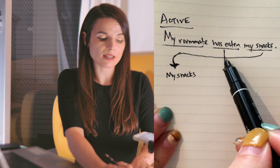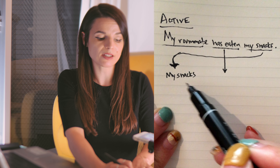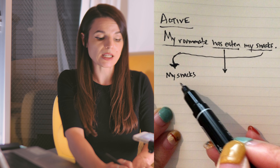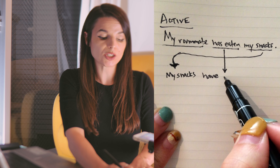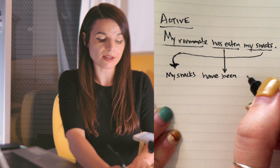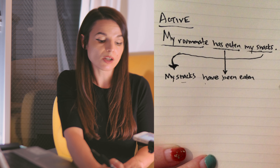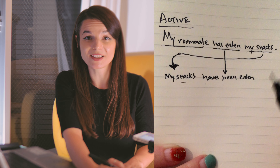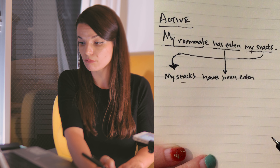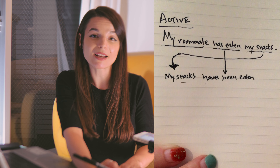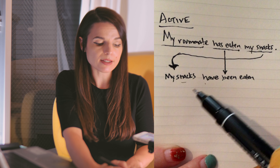Next, we need to change the verb. We know this is present perfect tense — 'has eaten' — but now our subject is plural, 'my snacks,' so we can't say 'has,' we need to say 'have.' That keeps our perfect tense structure, and then we need the be-verb: 'have been,' followed by the past participle 'eaten.' So we have 'my snacks have been eaten.' I could end the sentence there — if I don't know who ate my snacks, that sentence is fine. If I know my roommate did it, I could add 'by my roommate': 'my snacks have been eaten by my roommate.'